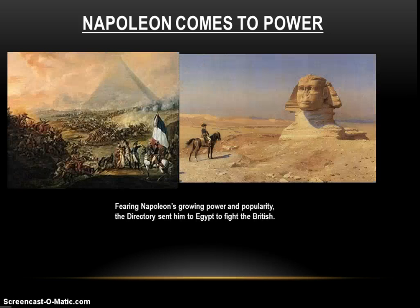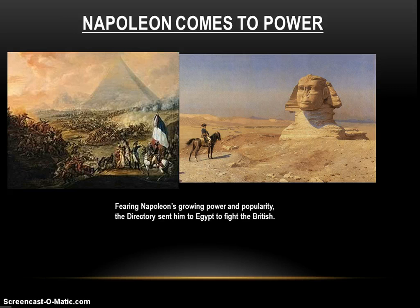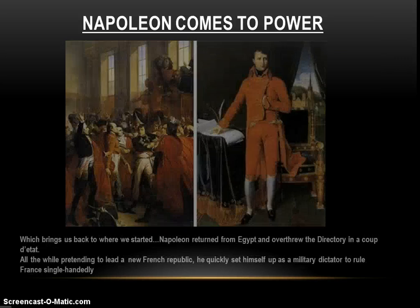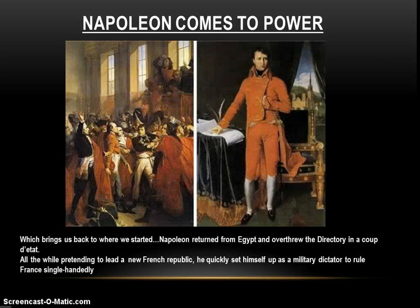He reorganized the troops, improved their living conditions, reinstilled discipline, and led them to a great victory against Austria. This made his name well known throughout Europe and made him incredibly popular with the French people. The Directory came to fear him, and rightfully so. Fearing his growing power, they sent him to Egypt to fight the British — on the surface to cut British eastern trade, but in reality to get him as far from France as possible. And as we know, Napoleon left Egypt, returned to France in 1799, and overthrew the Directory in a coup d'état.